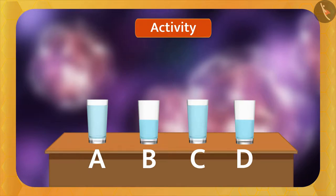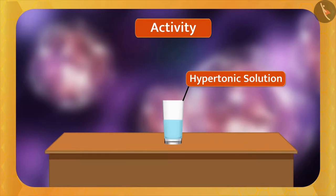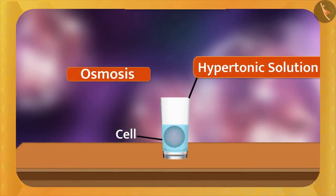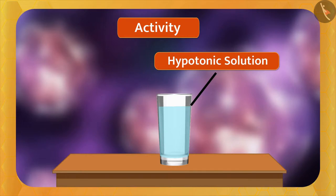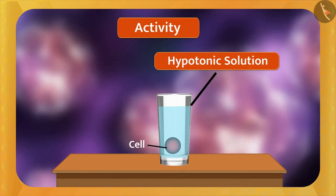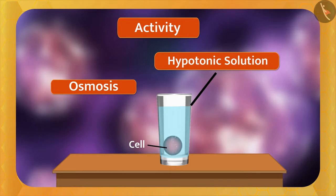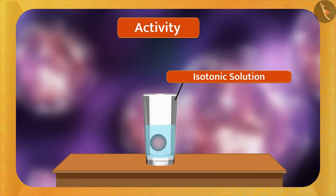Now, what happens if you put a cell into these solutions? First, place the cell in the hypertonic solution — the water concentration there is less than inside the cell, so osmosis occurs: water moves out of the cell through the plasma membrane and the cell shrinks. In the hypotonic solution, the water concentration is higher than inside the cell, so osmosis causes water to enter the cell through the plasma membrane and the cell swells. In the isotonic solution, there is no transport of water at all because both concentrations are equal.